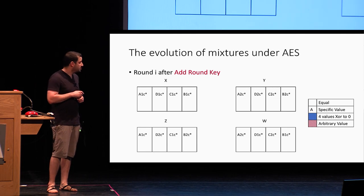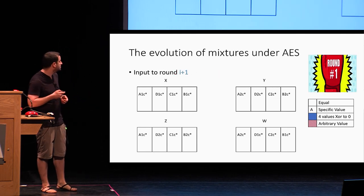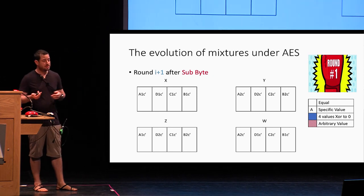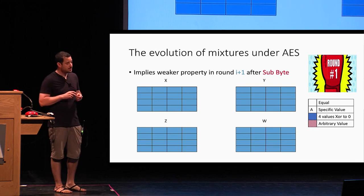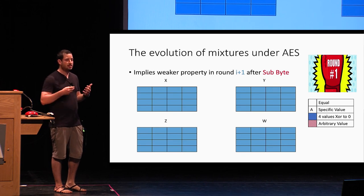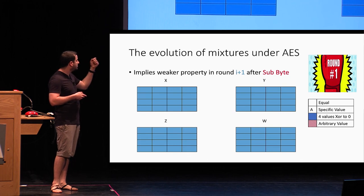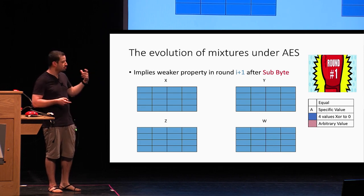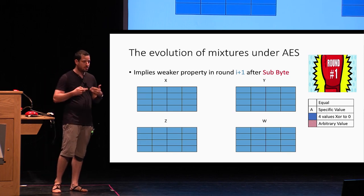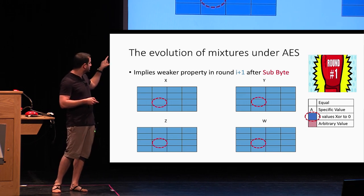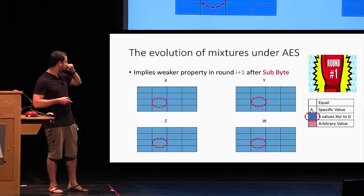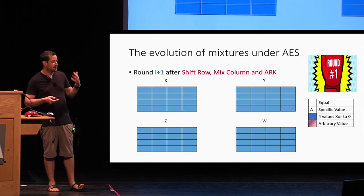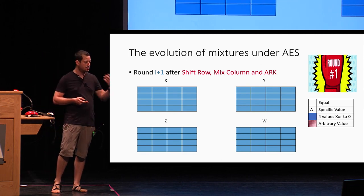Then we add the round key — values change but the structure is preserved — and we reach the input to round I+1. We do sub-byte again; values change but structure remains. Now we can see that the column equality implies a weaker property: when we take all four values in those four mixtures, they sum to zero. This property holds for each byte separately. Since shift-rows, mix-column, and add-round-key are also linear transformations, this property is preserved, bringing us to the start of round I+2.